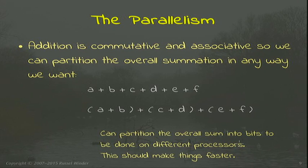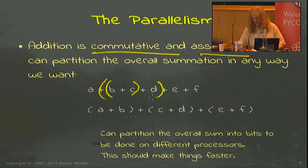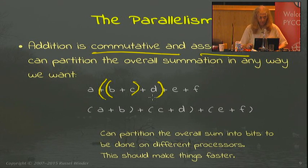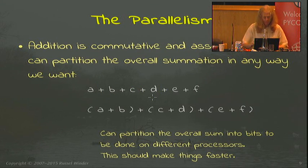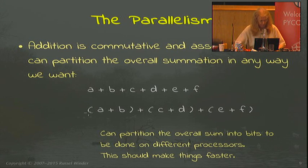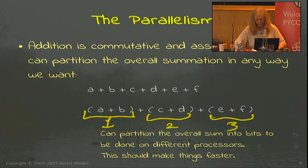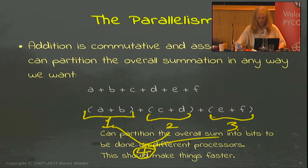How are we going to get parallelism out of this? It's all about commutativity and associativity. We can bracket this in many different ways and get the same result. We could put this on processor one, this on processor two, this on processor three, and then merge these together, perhaps on processor four, to get the result.